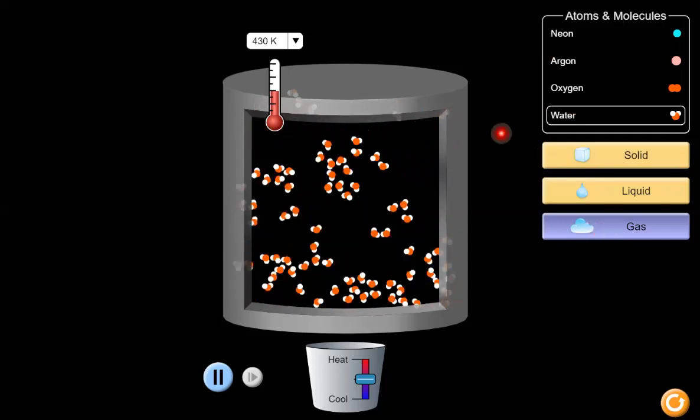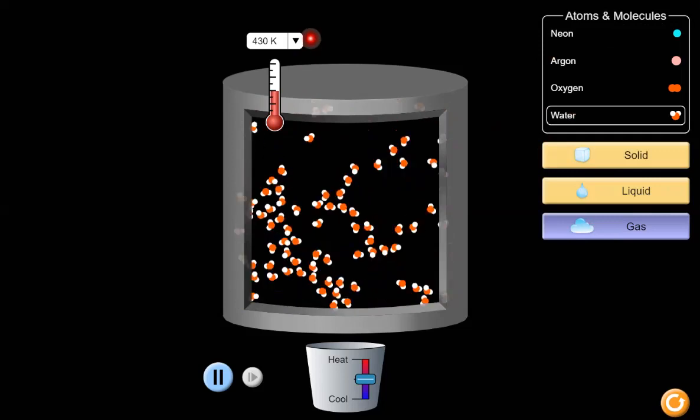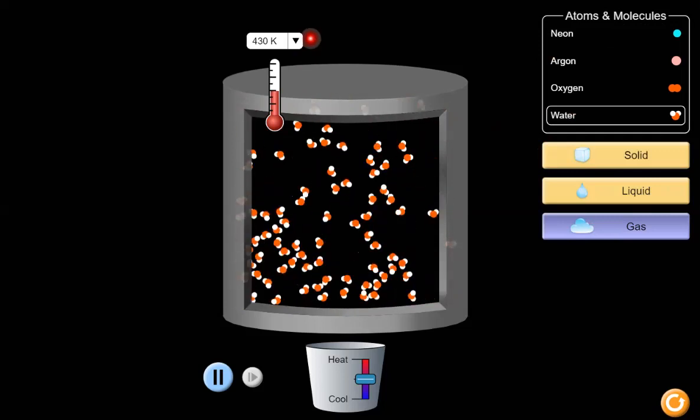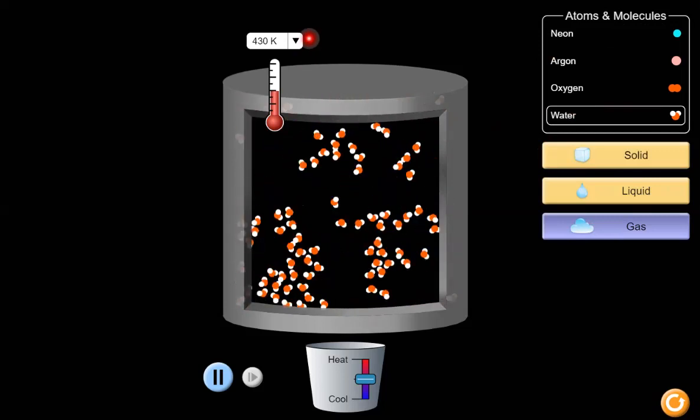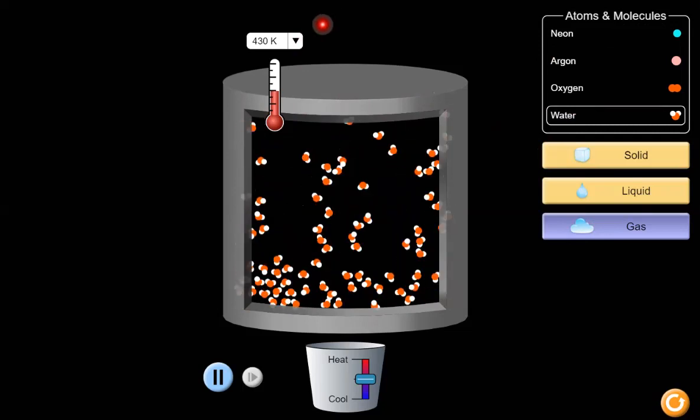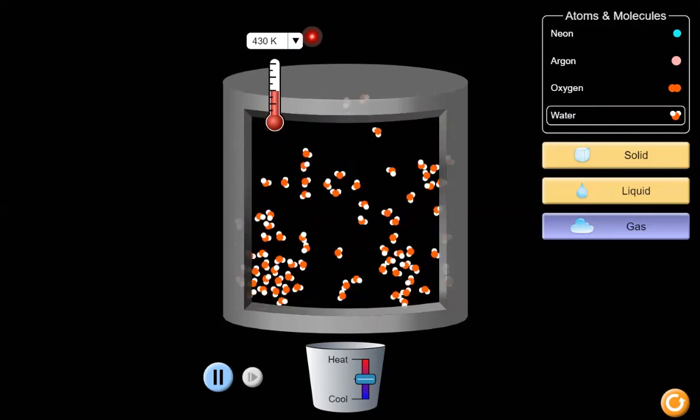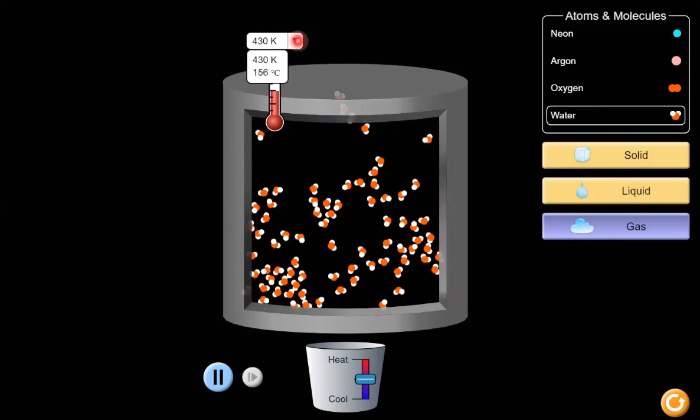Now we can change the temperature scale. We remember that there are three temperature scales: Kelvin, Fahrenheit, and Celsius. This PhET sim has Kelvin and Celsius.